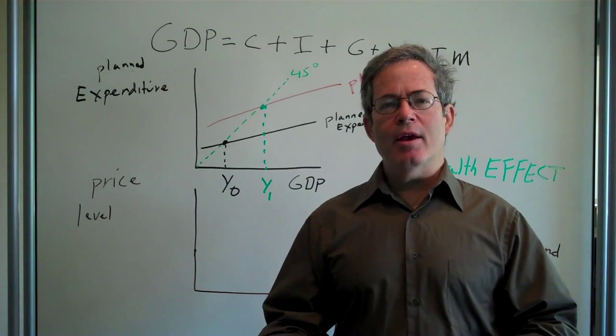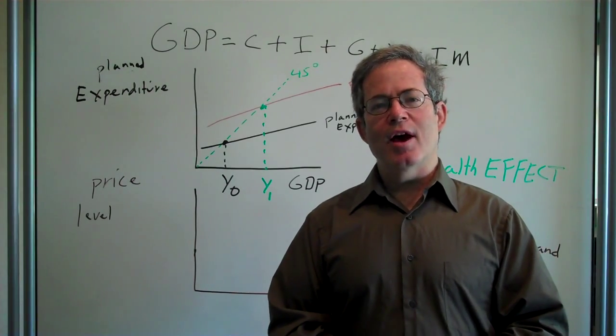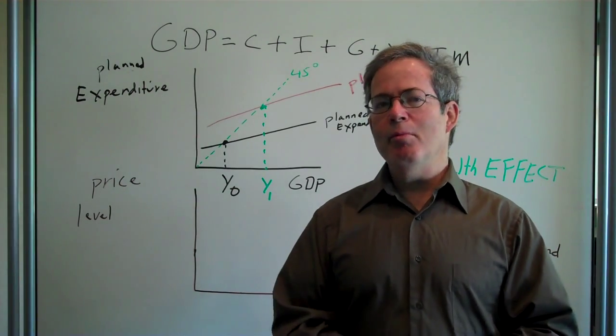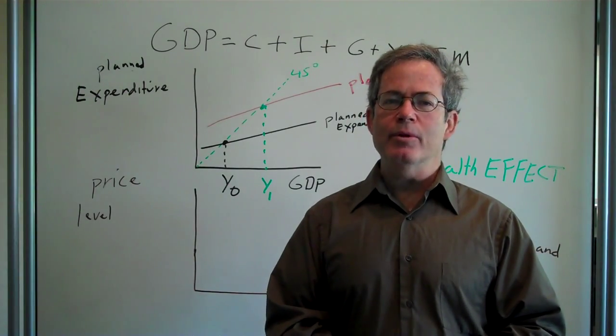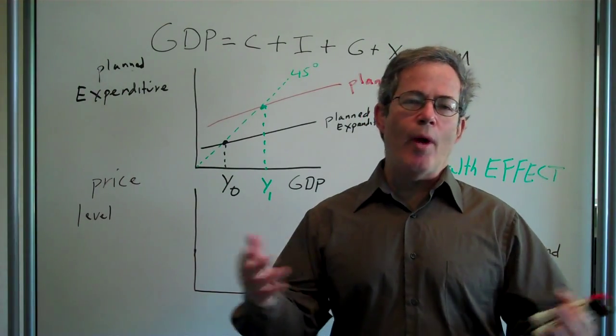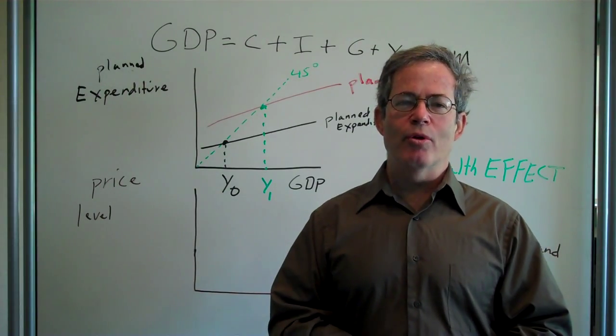If you have money in your pocket, $100 say, and prices are cut in half, then your money can buy twice as much as it could before. Your wealth has doubled, and so the idea is you'll go out and consume more. Buy more beer, buy more clothes, buy more something.